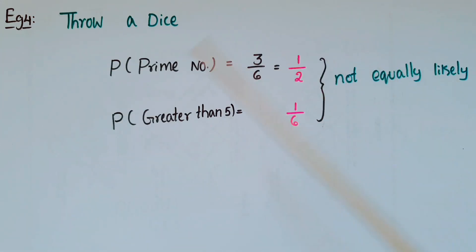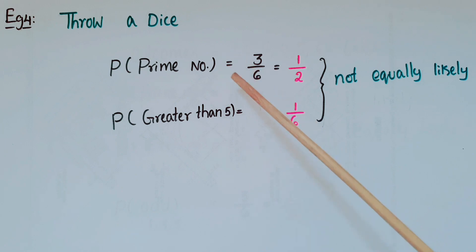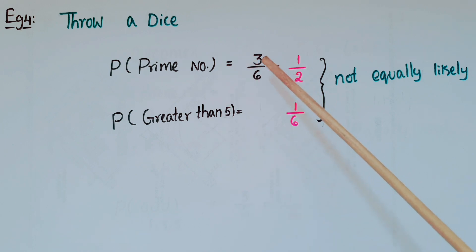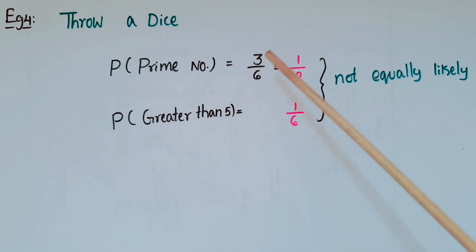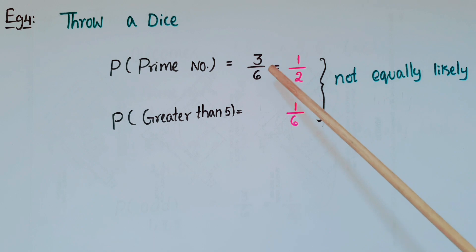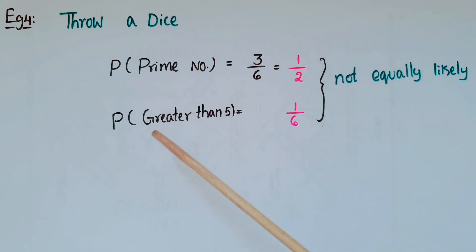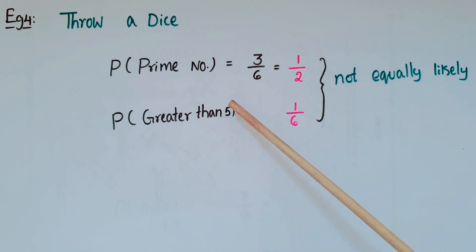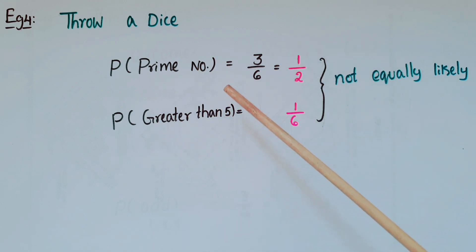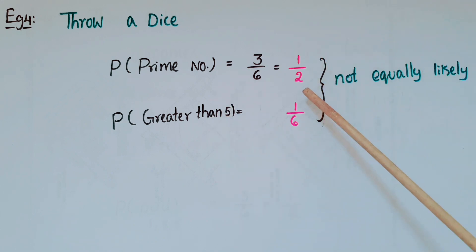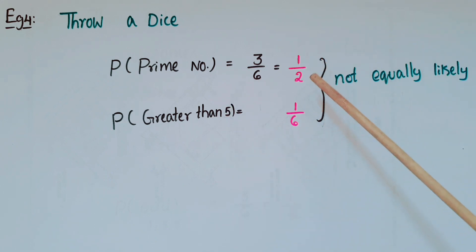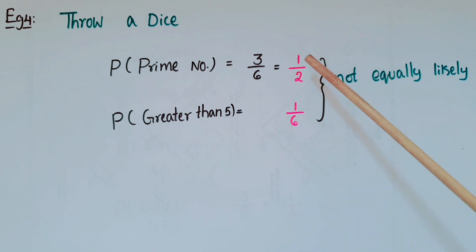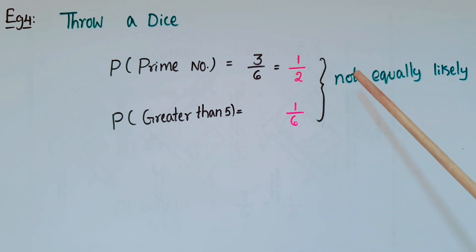Now observe this example. Probability of getting a prime number is 3/6 = 1/2, because out of six outcomes there are three prime numbers. Probability of getting a number greater than 5: out of six outcomes, only one number — 6 — is greater than 5, so the probability is 1/6. Since these probabilities are not equal, these are not equally likely.